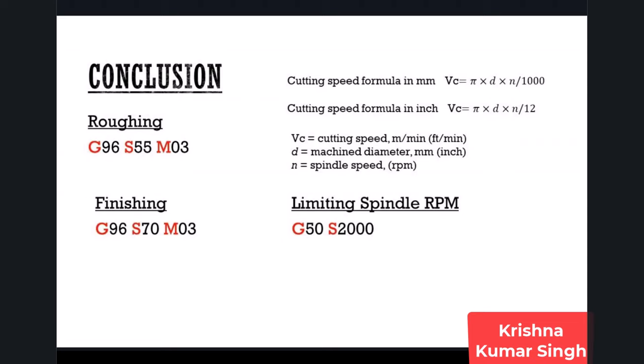As mentioned earlier, surface cutting speed is the relative velocity between the tool and the work piece, expressed in meters per minute or feet per minute. Cutting speed and RPM have a defined relationship given by a formula. There are two versions of the formula: one for mm and one for inches. With constant cutting speed, when the tool contacts a smaller diameter, the CNC spindle RPM increases, and when the diameter is larger, RPM decreases - keeping cutting speed constant. This ensures uniform surface finish on both small and large diameters.